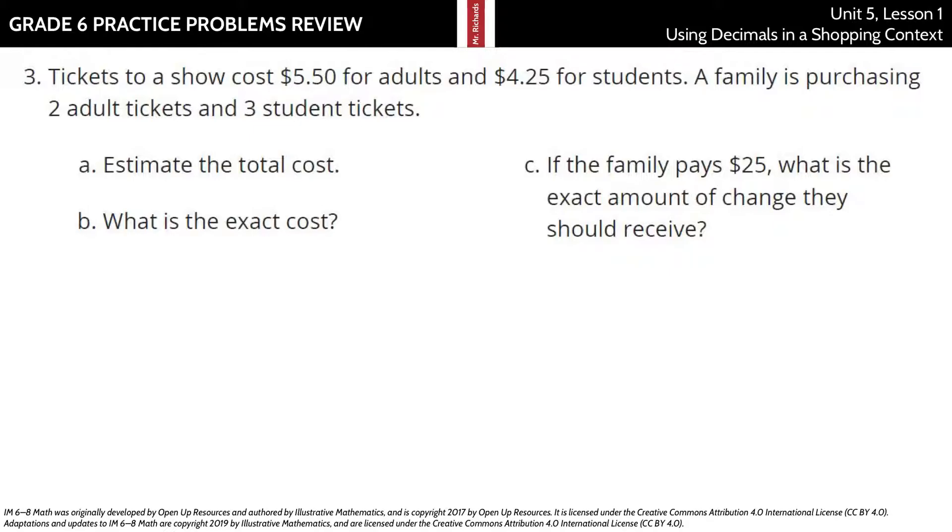In question three, tickets to a show cost $5.50 for adults and $4.25 for students. A family is purchasing two adult tickets and three student tickets. So in our first question here, estimate the total cost.